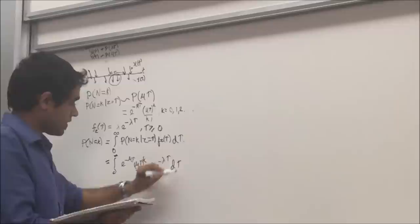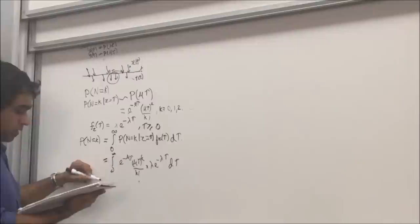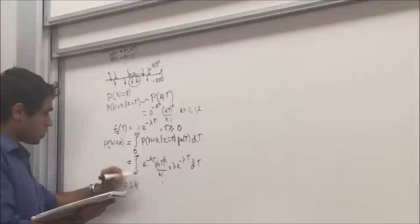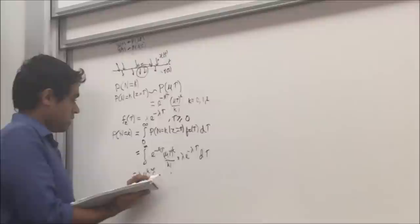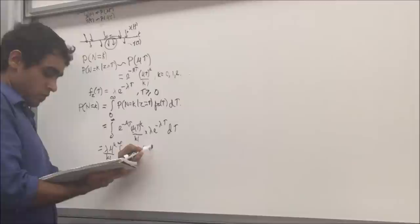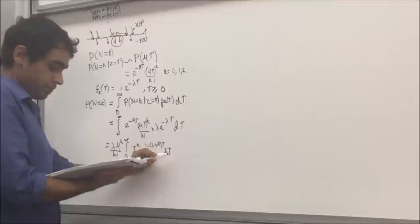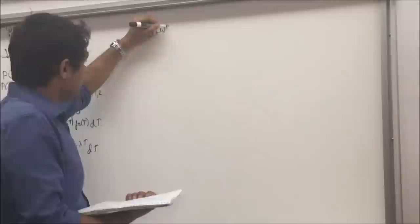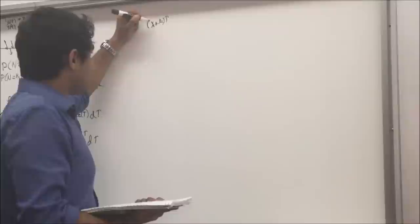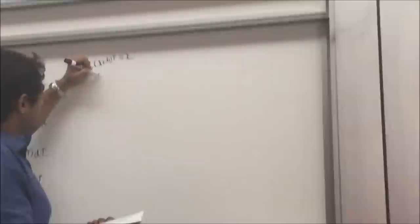Now we remove all the constants outside the integral. That equals lambda times mu raised to k divided by k factorial, times the integral from 0 to infinity of tau raised to k times e raised to minus (lambda + mu)*tau d tau. We now substitute lambda + mu*tau equal to x, giving d tau equals 1 divided by (lambda + mu) dx.